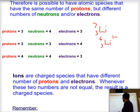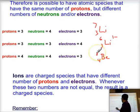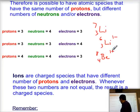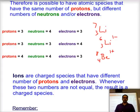If we instead have four protons, that is beryllium. Four protons plus four neutrons gives a mass number of eight, and with three electrons the charge is plus one. Species with different mass numbers are called isotopes; species with different charges are called ions.